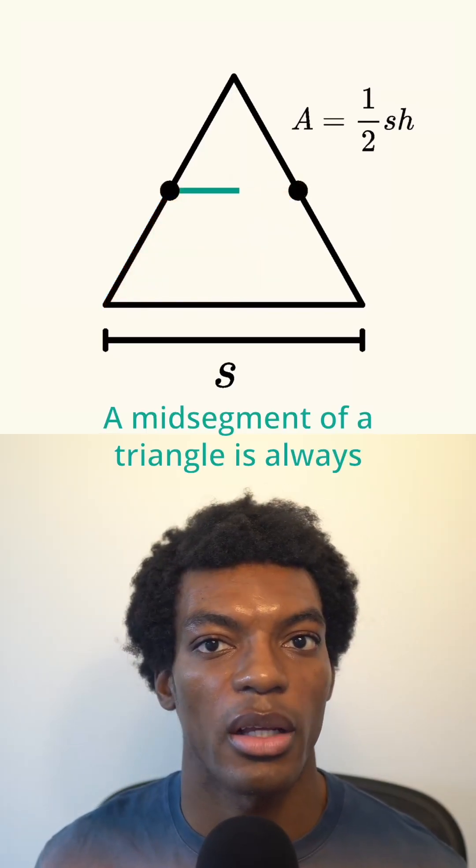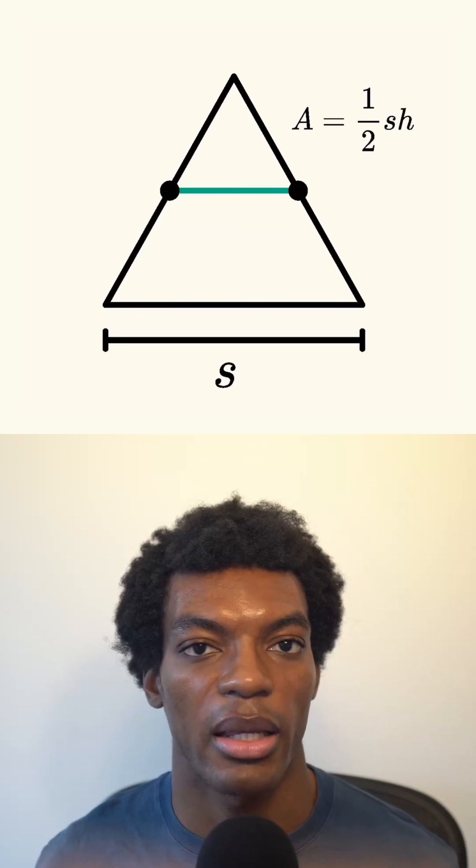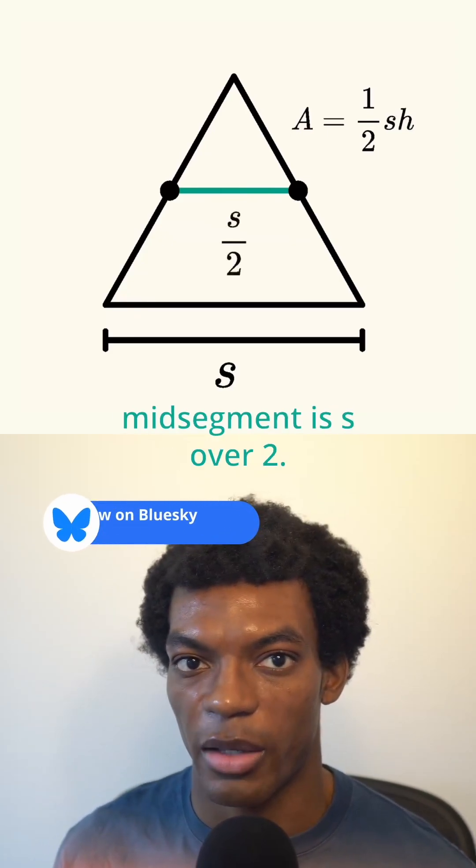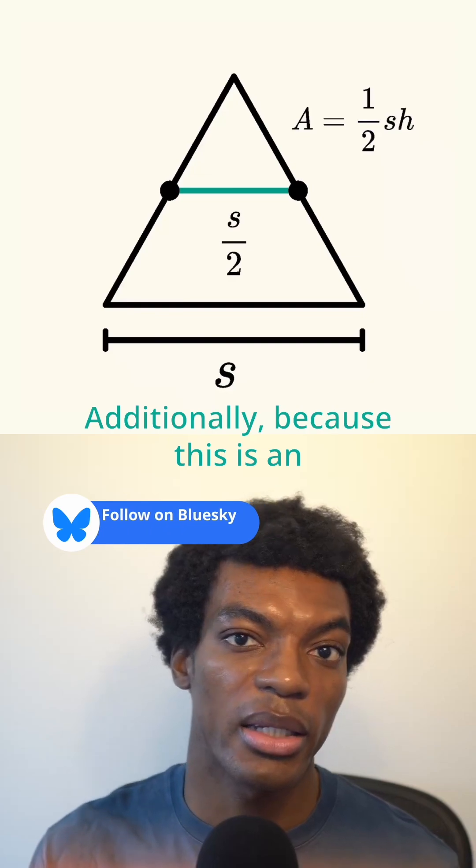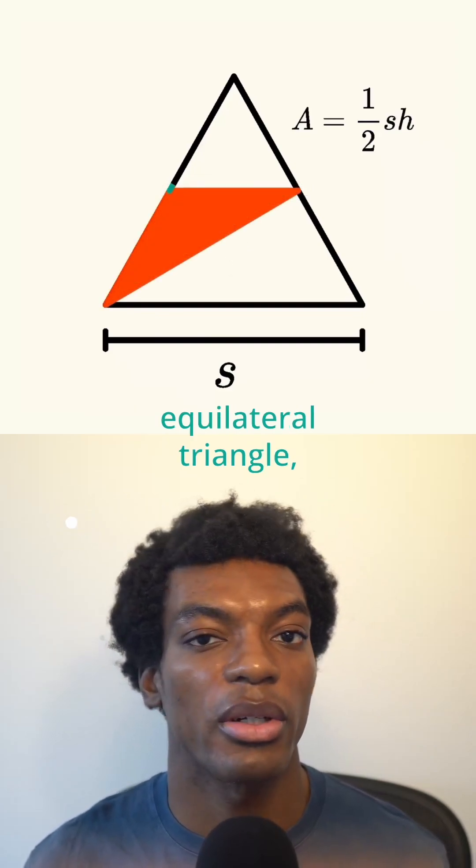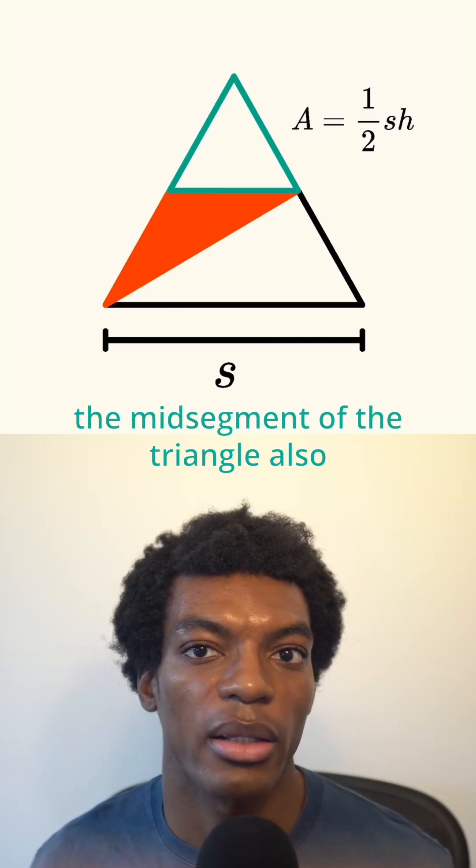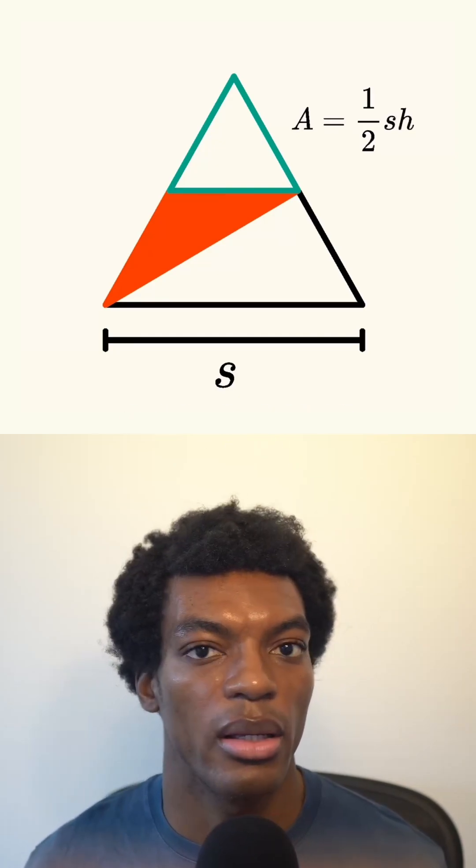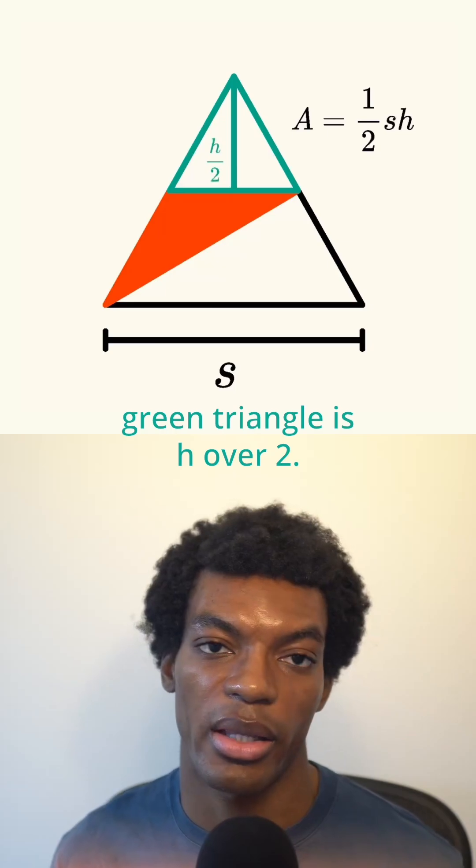A mid-segment of a triangle is always half the length of the unconnected side, so we can say the length of this mid-segment is S over 2. Additionally, because this is an equilateral triangle, the mid-segment of the triangle also splits the height in half, so the height of the top green triangle is H over 2.